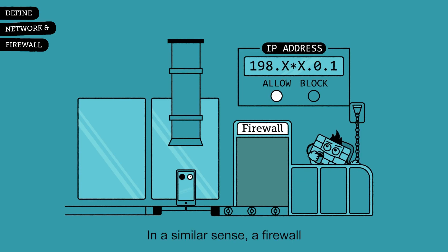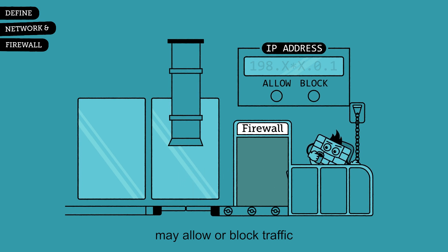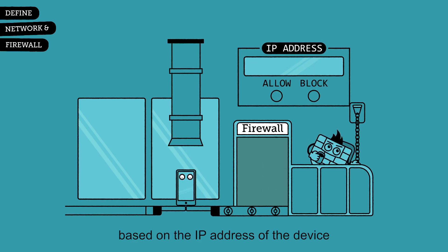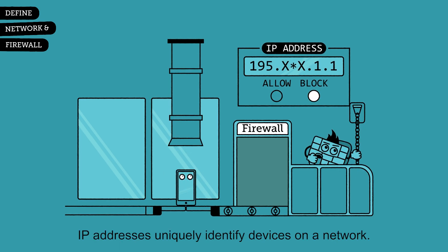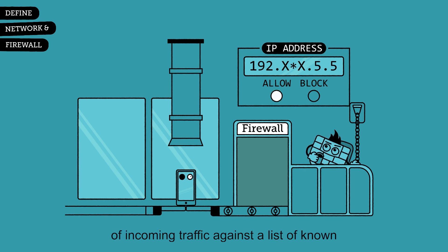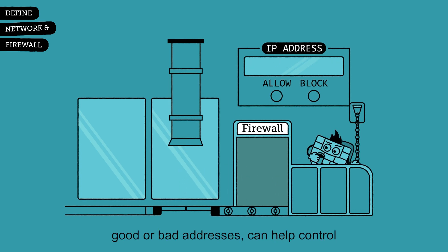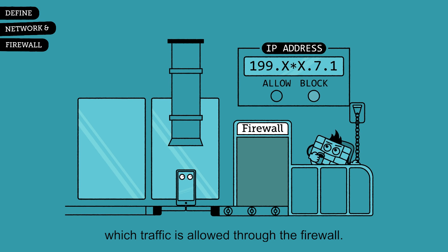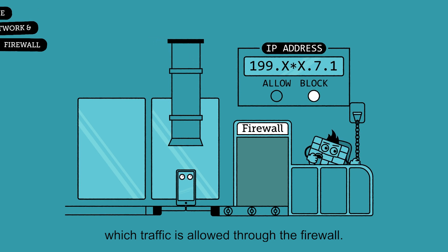a firewall may allow or block traffic based on the IP address of the device sending the traffic. IP addresses uniquely identify devices on a network, so comparing the IP address of incoming traffic against a list of known good or bad addresses can help control which traffic is allowed through the firewall.